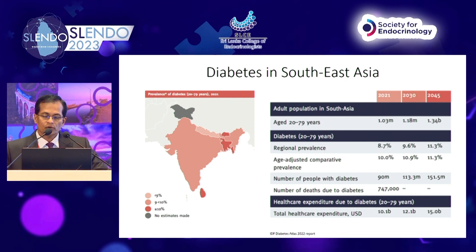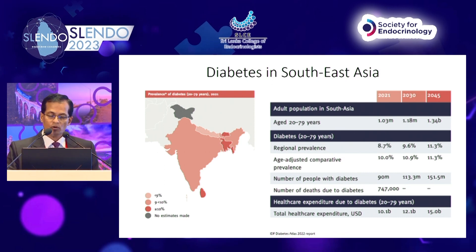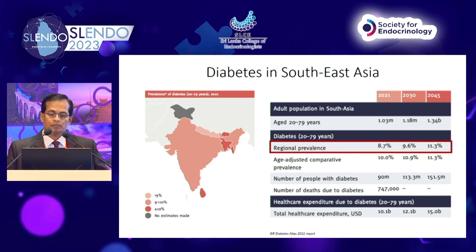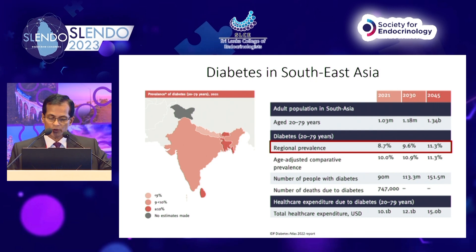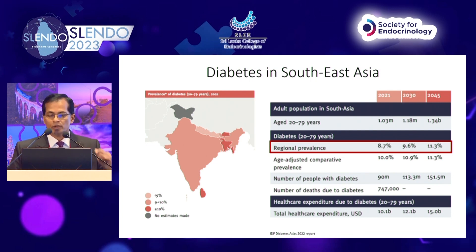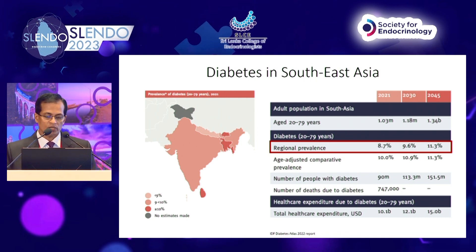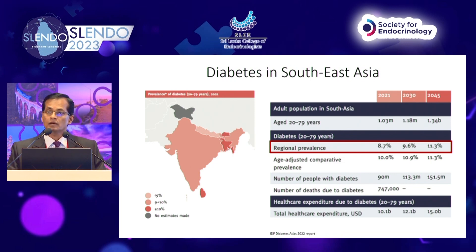If you look at diabetes in South Asia — Prasad has already spoken about this — I just want to show one point: the regional prevalence was just 8.7% in 2021 according to the IDF 2022 data, expected to go up to 9.6% and 11.3% in 2045, but I think we are already beyond these projections even now.